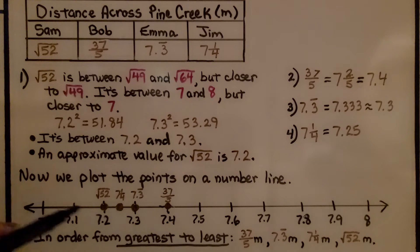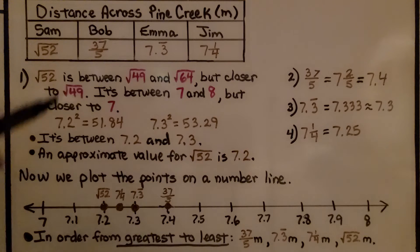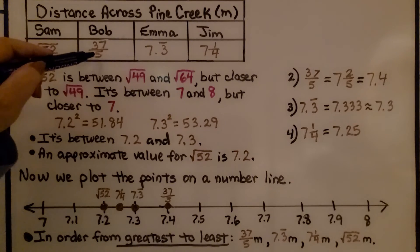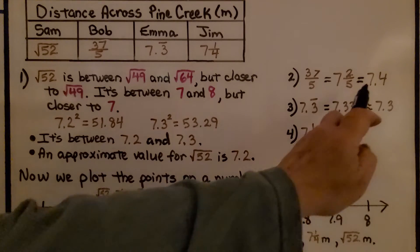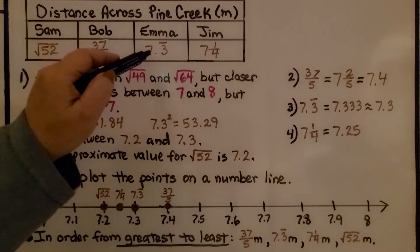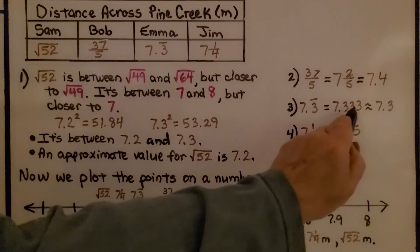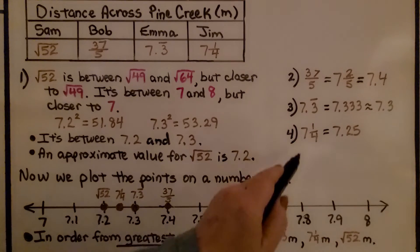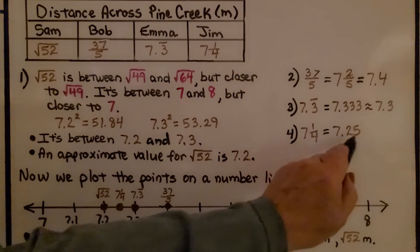An approximate value for the square root of 52 is 7.2. Now we look at 37 fifths. 37 divided by 5 is 7 and 2 fifths. As a decimal, that would be 7.4. This one's already written as a decimal. We have 7.3 repeating, so that's approximately 7.3. For 7 and 1 fourth, that would be 7.25.